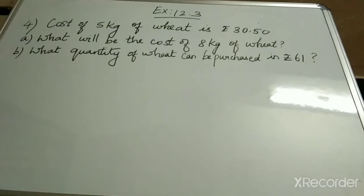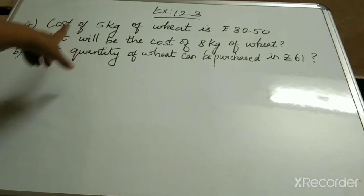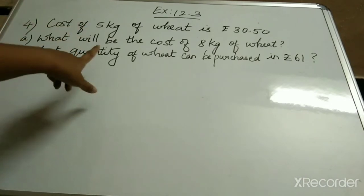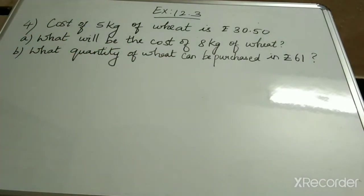Exercise 12.3, Question number 4. The cost of 5 kilograms of wheat is rupees 30.50.